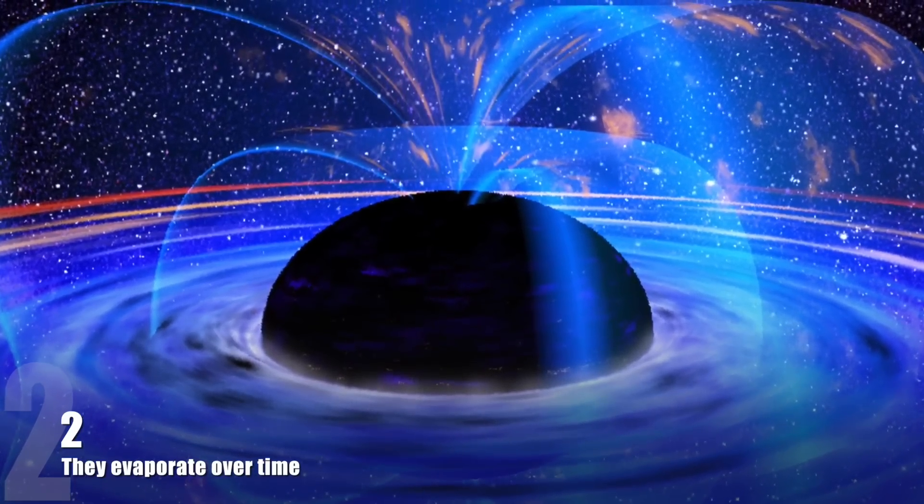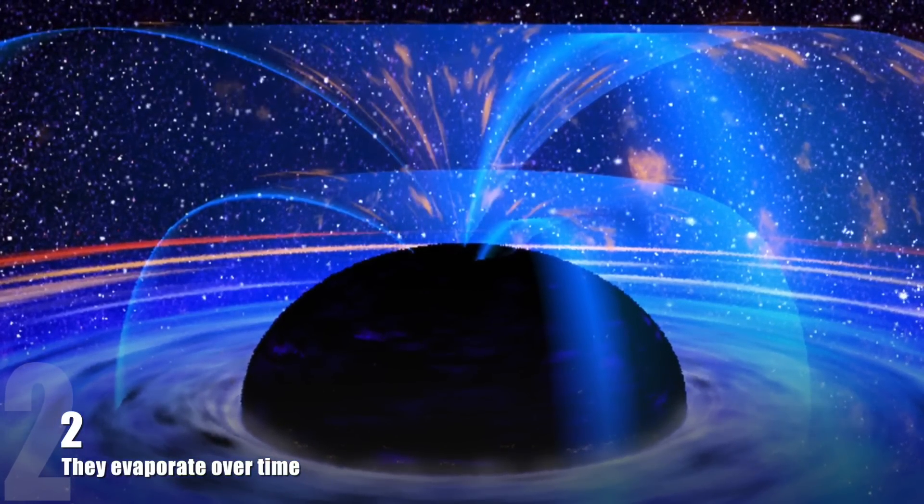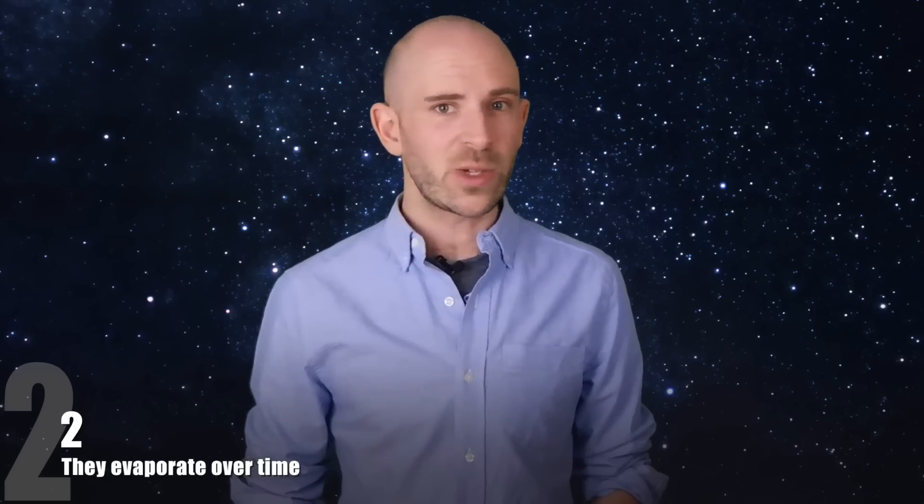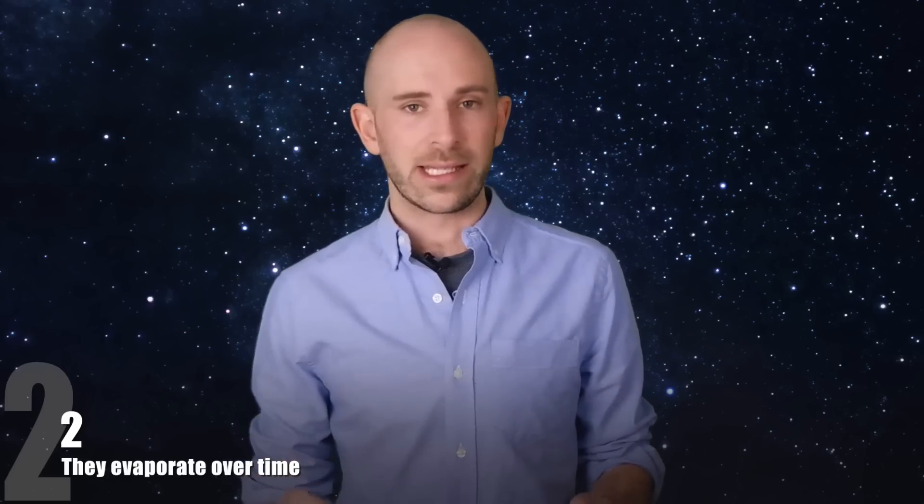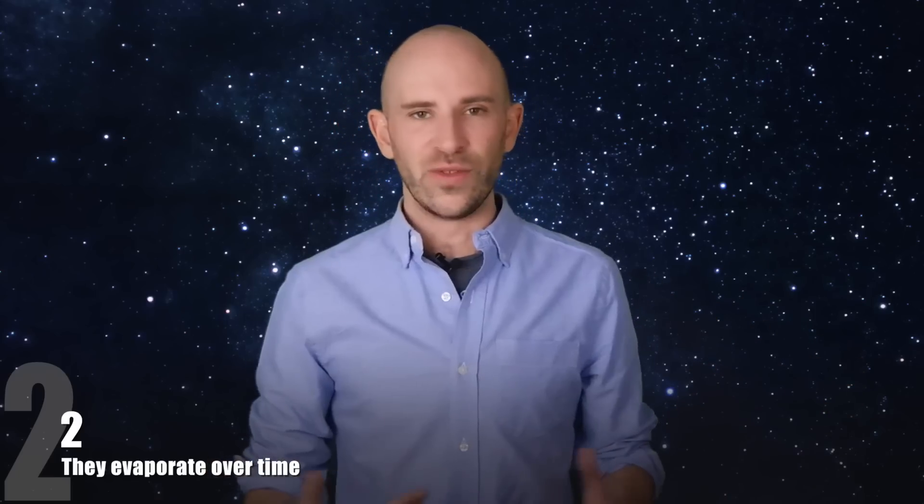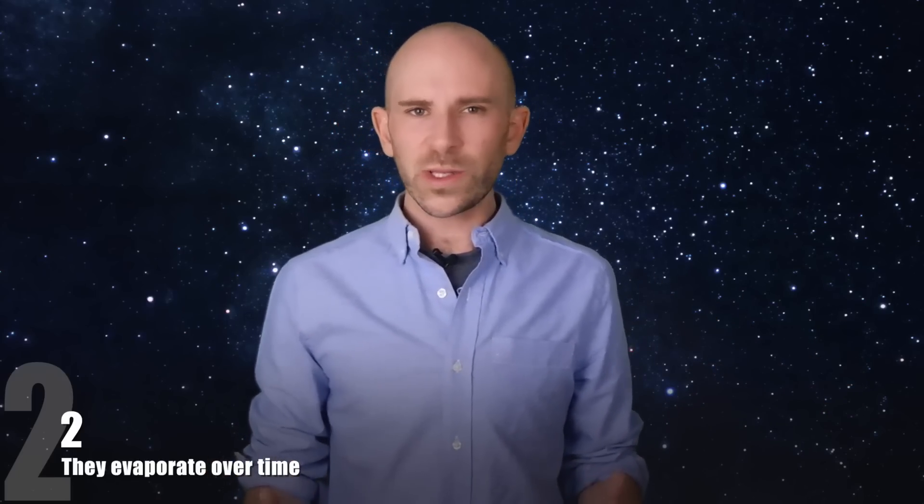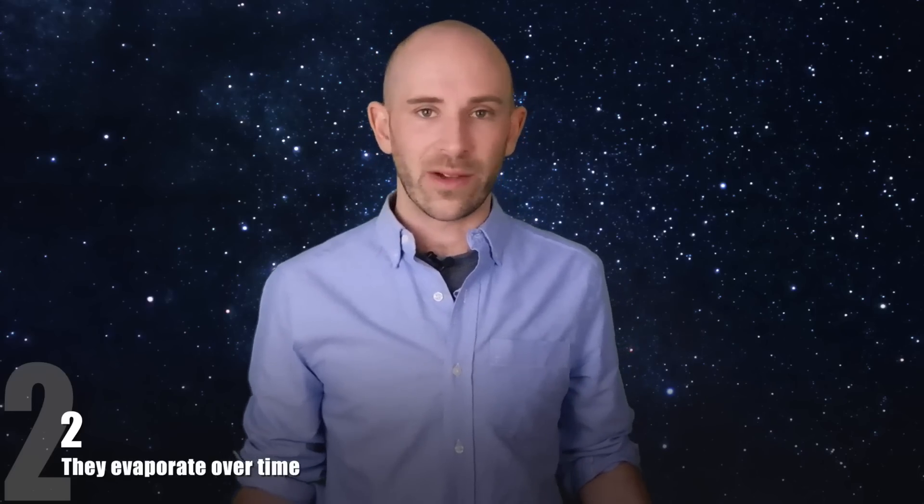When they pop into existence, a particle and an antiparticle combine and then they disappear again. But when the two particles pop into existence near the event horizon, they don't cancel each other out. Instead, one falls into the black hole and the other goes off into space. Over time, these escaping particles cause the black hole to deteriorate. This means black holes die, just like everything else in the known universe.